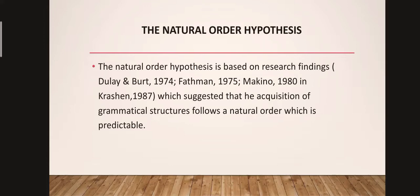The natural order hypothesis is based on research findings. For a given language, some grammatical structures tend to be acquired early while others are acquired later. This order seemed to be independent of the learner's age, L1 background, and conditions of exposure. Although the agreement between individual acquirers was not always 100% in the studies, there were statistically significant similarities that reinforced the existence of a natural order of language acquisition. Krashen, however, points out that the implication of the natural order hypothesis is not that a language program syllabus should be based on the order found in the studies. In fact, he rejects grammatical sequencing when the goal is language acquisition.